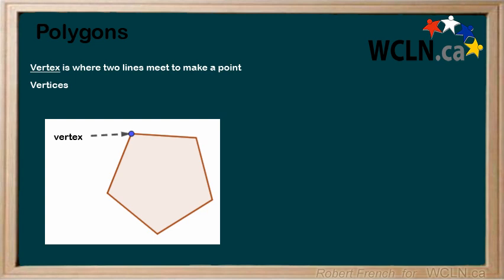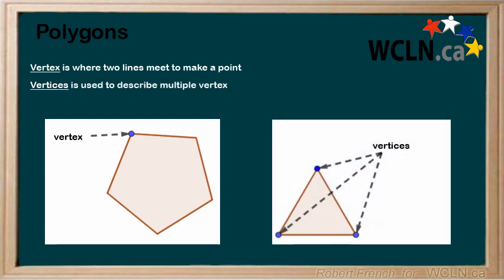When referring to a single point, we call it a vertex. If you are referring to multiple vertex or all of the vertex on a polygon, we call them vertices, the plural form of the word.